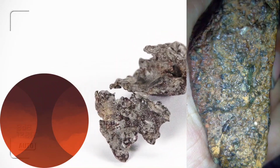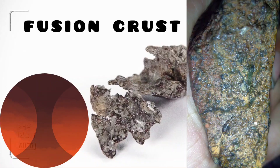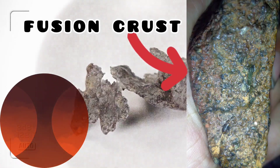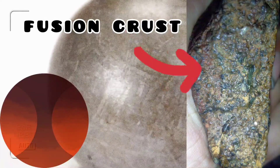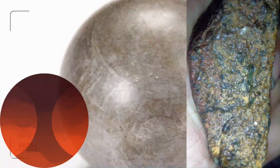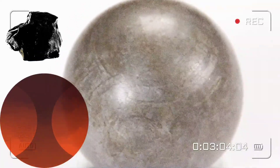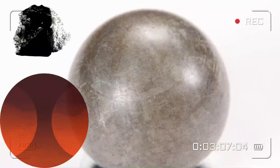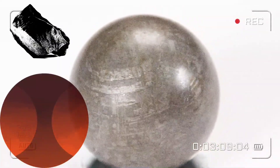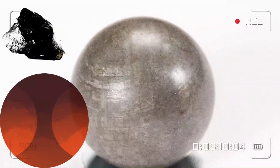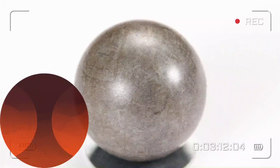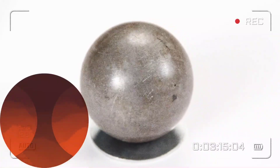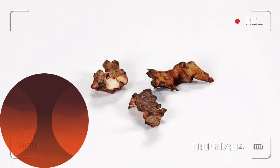Another test is the fusion crust test. The fusion crust is a thin, dark rind formed on a meteorite as it passes through our atmosphere. It does not occur on earth rocks and will disappear over time due to weathering, but it can be seen on some fresh meteorites.